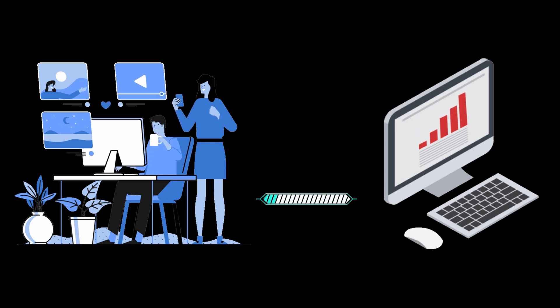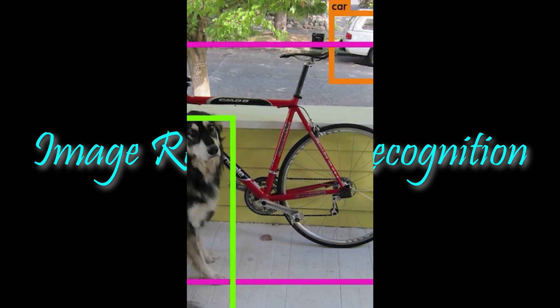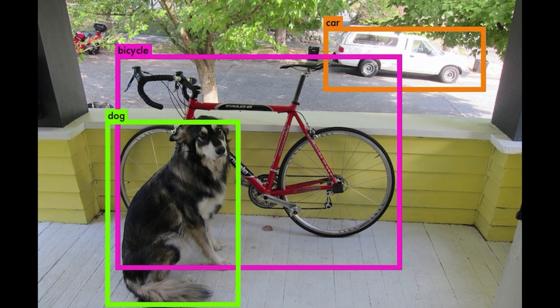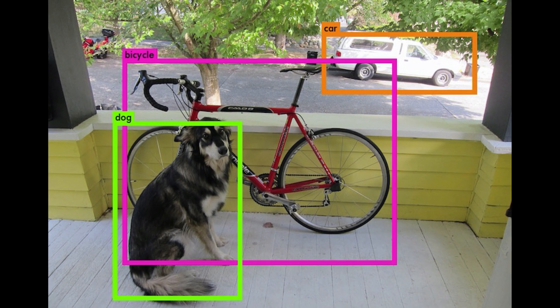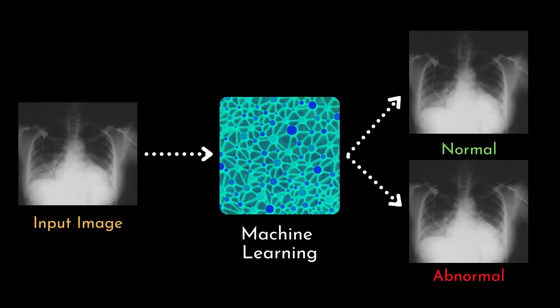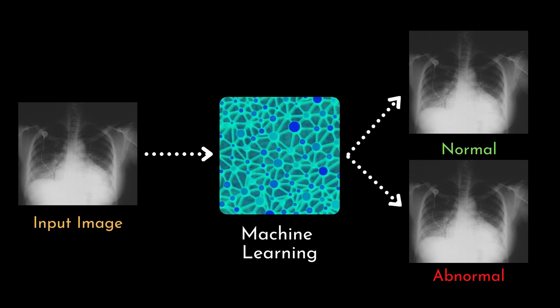Let us look at some applications of machine learning. Image recognition is a common application, used to identify people, objects, and places in an image. Facebook's automatic friend tagging suggestion uses image recognition to identify and tag friends from photos we upload. Another application is medical imaging diagnosis, where machine learning can screen X-rays, CAT scans, and other imaging technologies to identify and detect abnormalities.